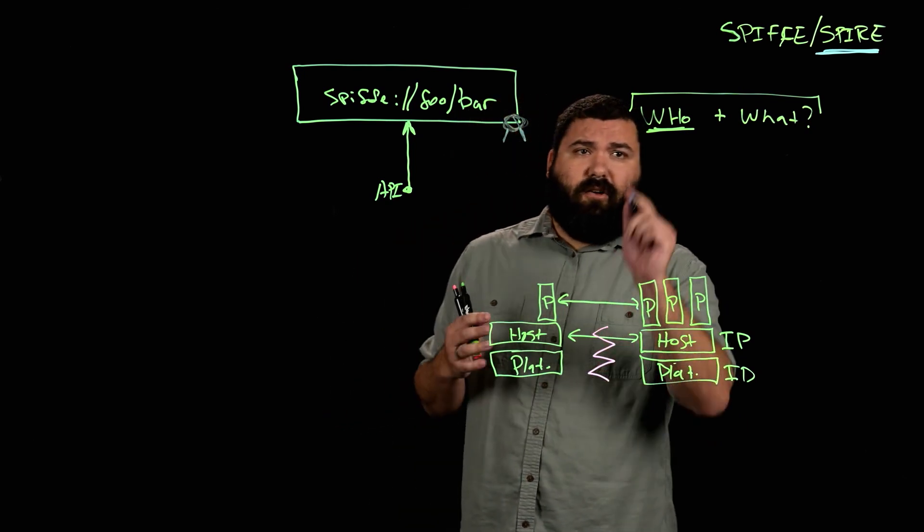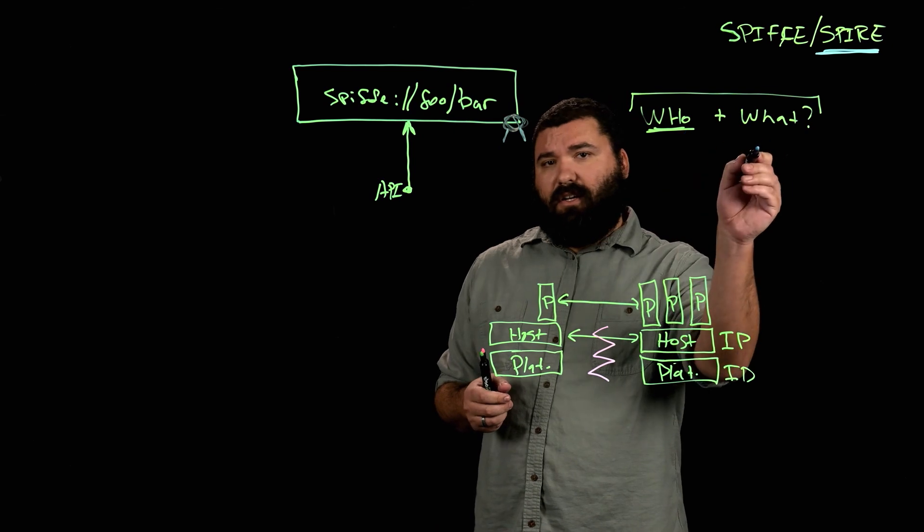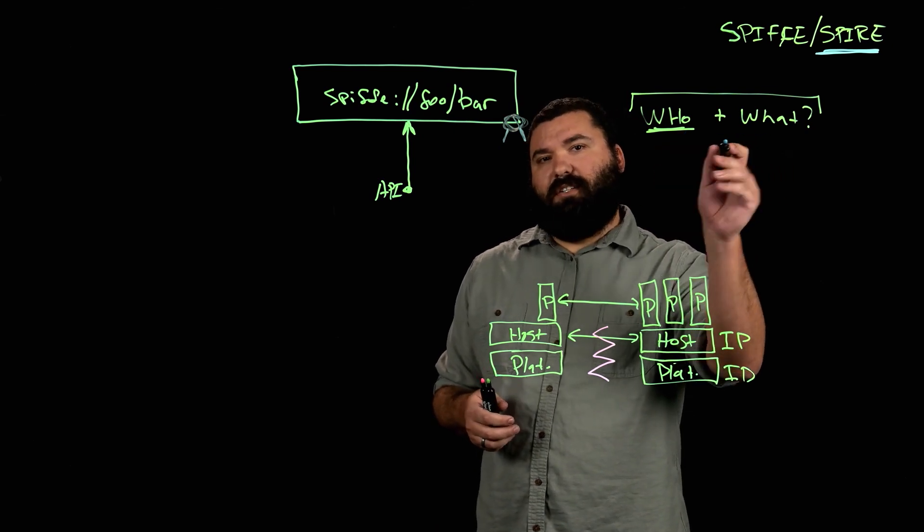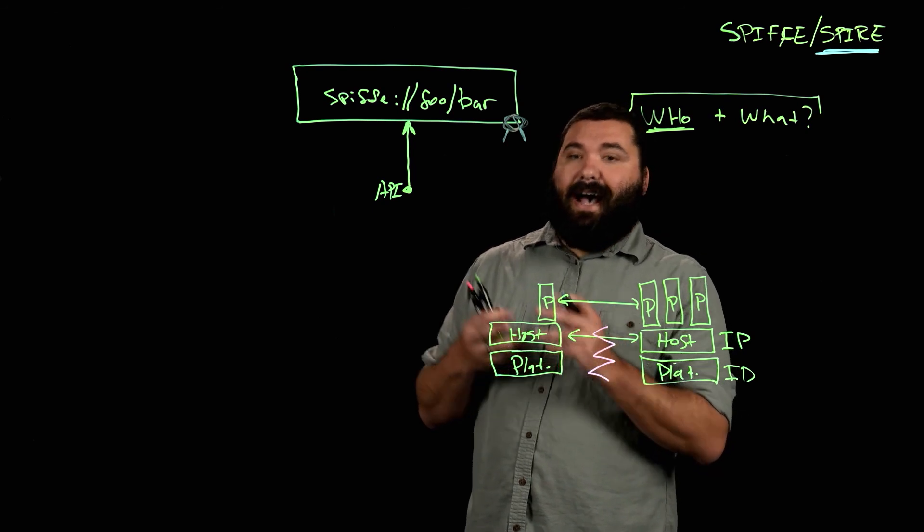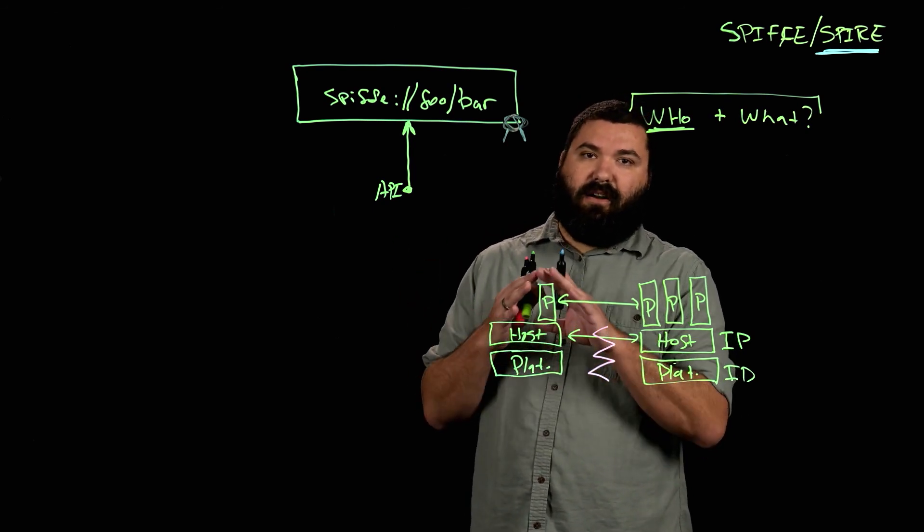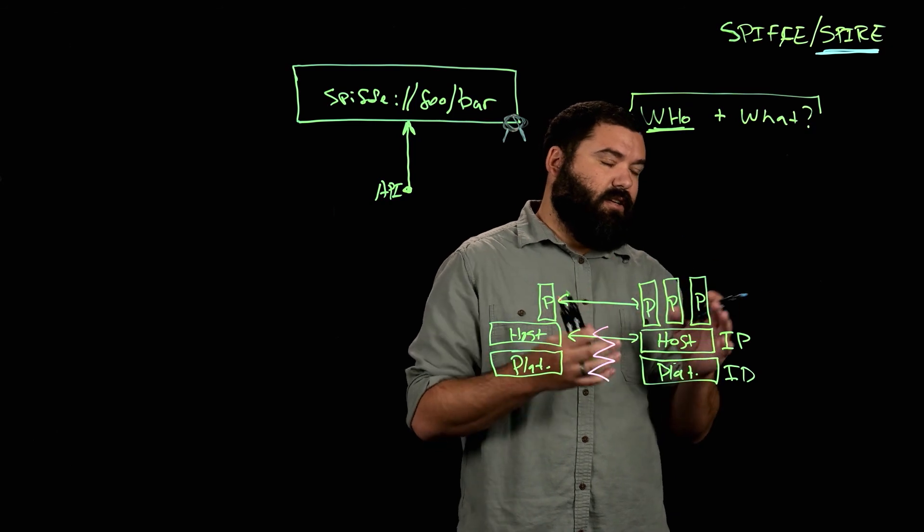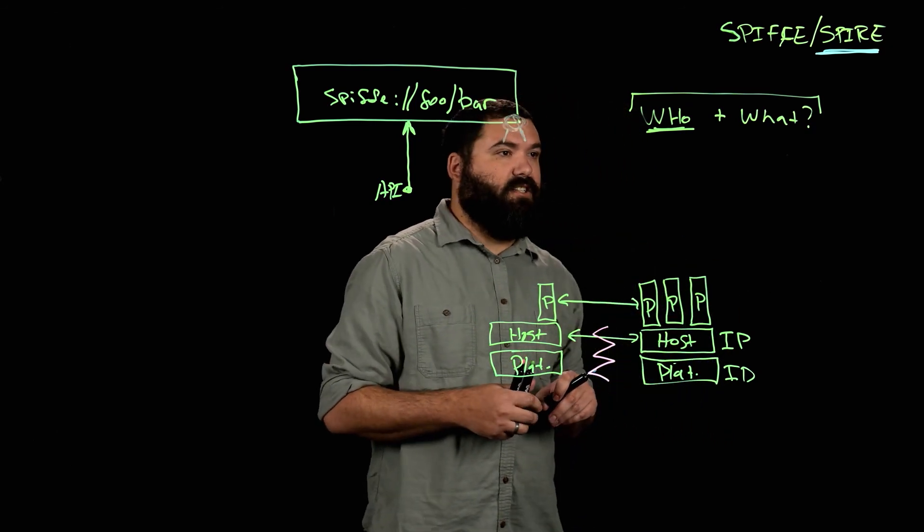Importantly, it focuses on this who, not really on the what part of the policy. Spiffe and Spire both don't really reason about access policy. Instead, we just reason about identity. So the access policy part is totally out of scope for Spiffe and Spire projects.